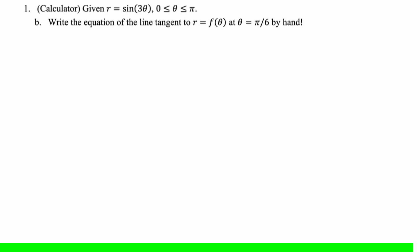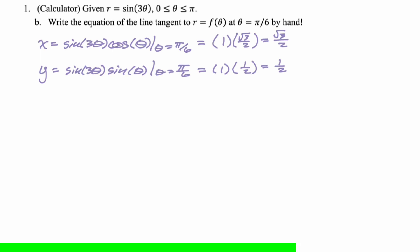Let's take a look at the next part. Write the equation of the line tangent to r equals f of theta at theta equals pi over 6 by hand. That's so unfortunate because it says calculator literally right above it. All right, so we're going to do the x equals r cosine, y equals r sine, and go from there. So x is r times cosine, so sine of 3 theta, cosine of theta. We need to evaluate this at pi over 6. So pi over 6 times 3 is pi over 2. Sine of pi over 2 is 1. And then the cosine of pi over 6 is root 3 over 2. So we get 1 times root 3 over 2, which is just root 3 over 2, obviously. Y is equal to r sine of theta, and r is sine of 3 theta. So we're going to sine of 3 theta, sine of theta. We need to evaluate that at pi over 6. Again, sine of pi over 2 is 1. Sine of pi over 6 is 1 half. So we get 1 times 1 half, which is just 1 half.